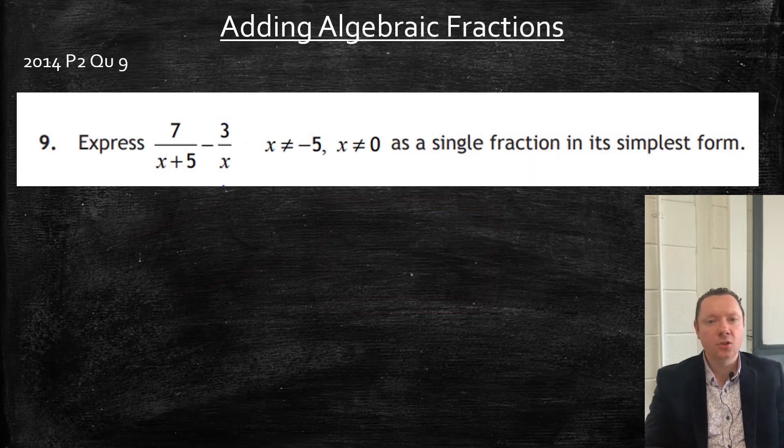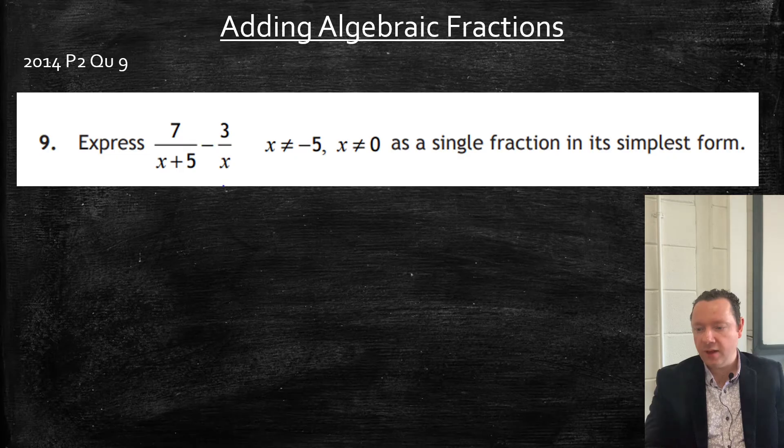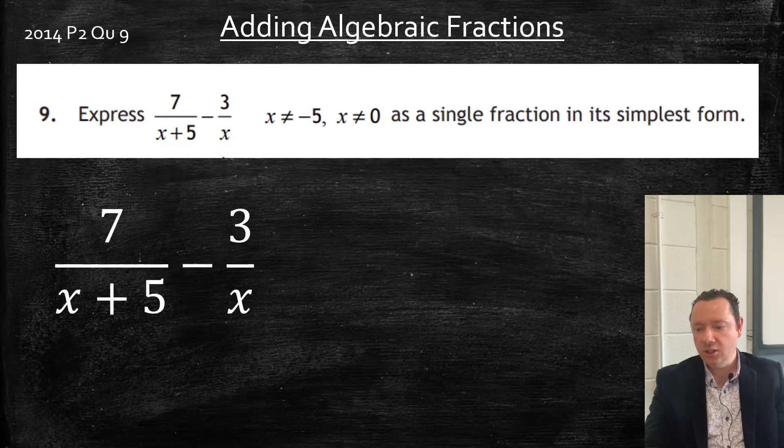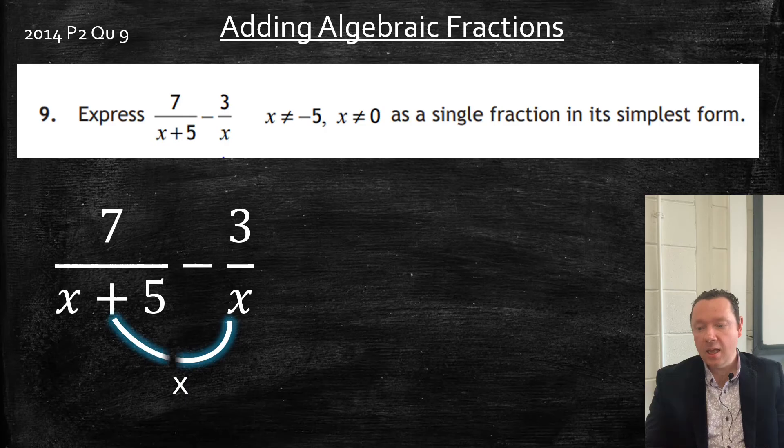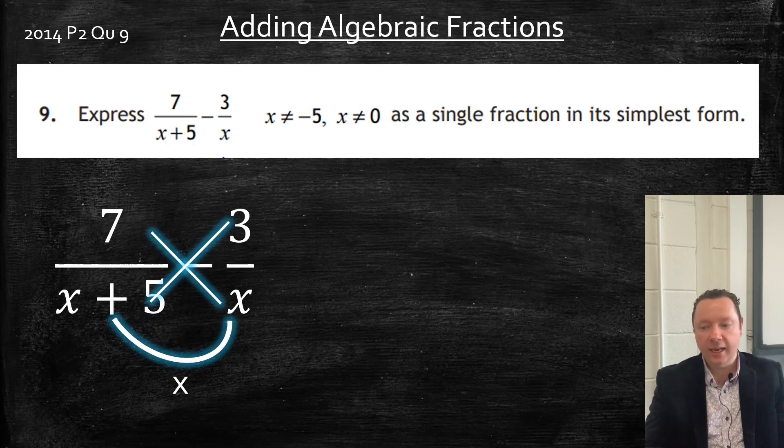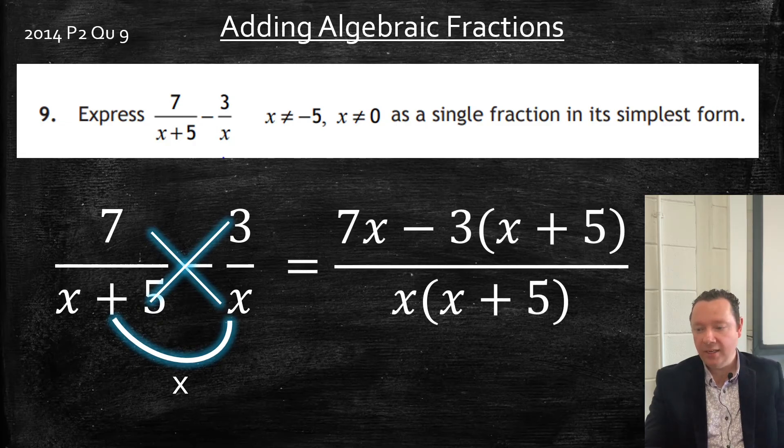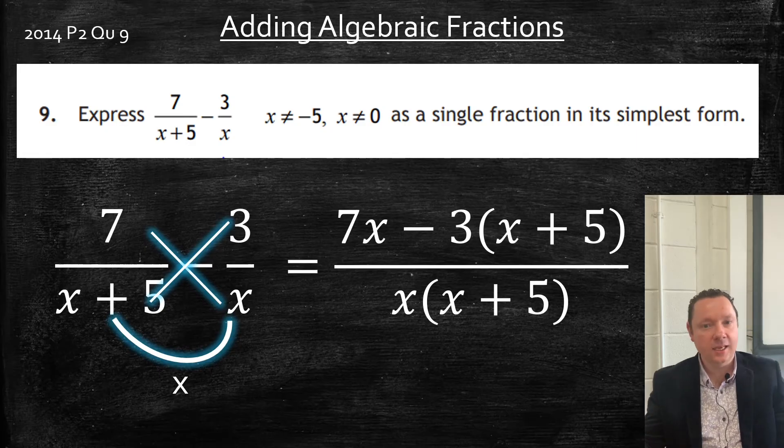2014 paper 2, question 9. It says express 7/(x + 5) - 3/x as a single fraction. We're adding fractions. So here's our fractions. Common denominator, just times the denominators. Then we can do the first one times x and the second one times (x + 5). So putting that together on the top,